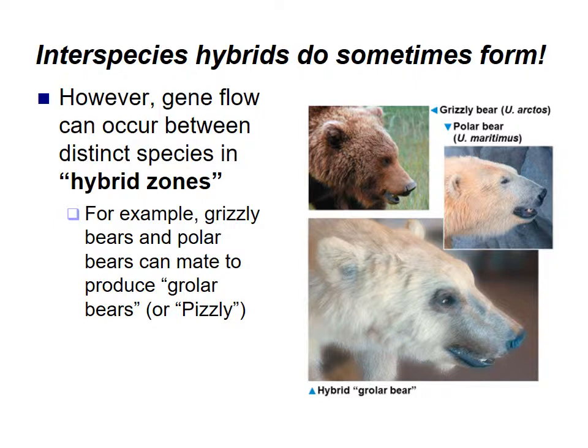Even with reproductive isolating mechanisms, interspecies hybrids do sometimes form. Gene flow can occur between distinct species in hybrid zones where both are present. For example, grizzly bears and polar bears can mate and produce what are called growler bears or pizzly bears. Since the grizzly bear's range and the polar bear's range are beginning to overlap, it's creating a hybrid zone where we're more likely to get these hybrids.